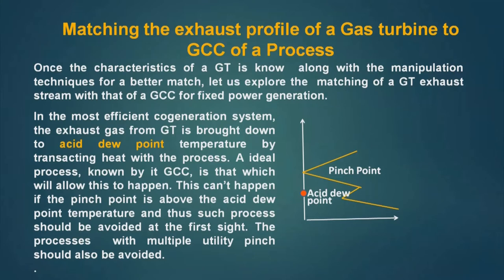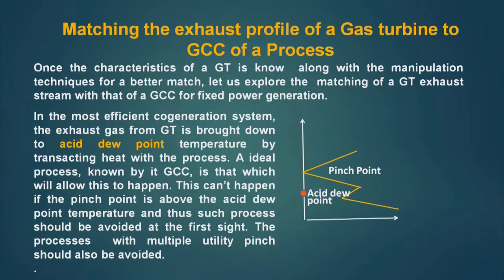The minimum temperature up to which we can go is the acid dew point temperature. In fact, we keep our temperature a little bit higher than the acid dew point temperature in a design, but in an ideal design we can say we can go up to the acid dew point. An ideal process GCC is that which will allow this to happen. However, this cannot happen if the pinch point is above the acid dew point temperature. Here in this plot we see that the acid dew point is below the pinch point, so the GT exhaust gas profile cannot touch the dew point — it has to be above the pinch point.